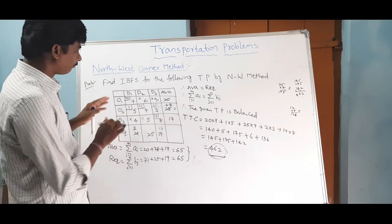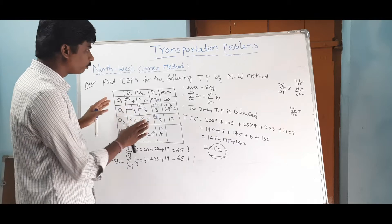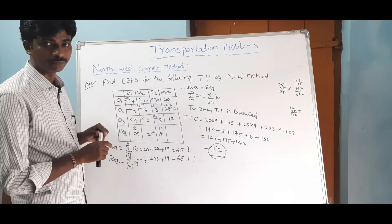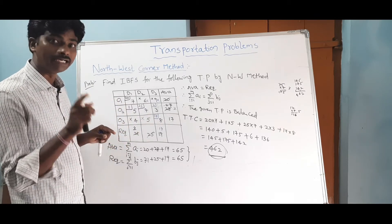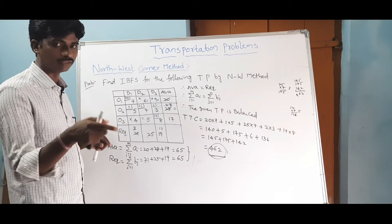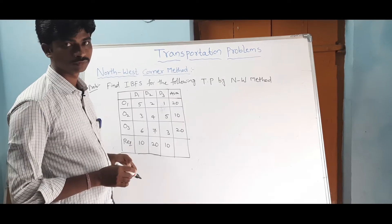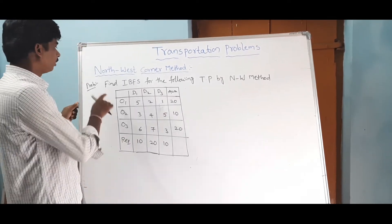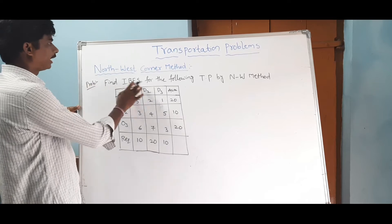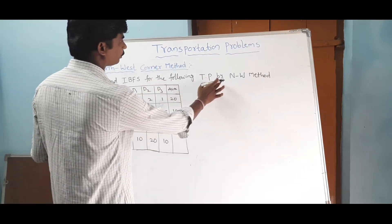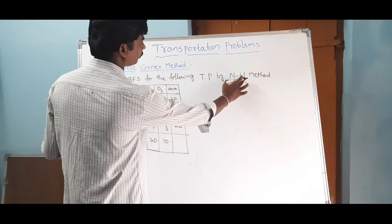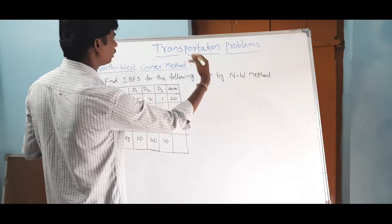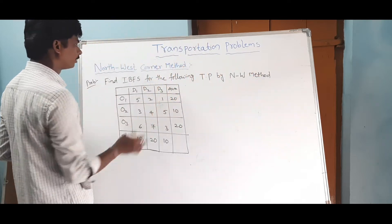Now we have covered the balanced transportation problem. Let us now talk about the unbalanced transportation problem. Next problem: find the IBFS for the following transportation problem by the North-West Corner Method.